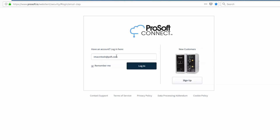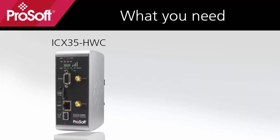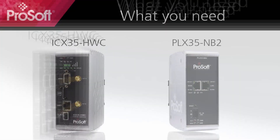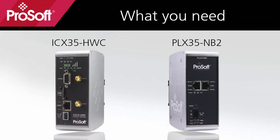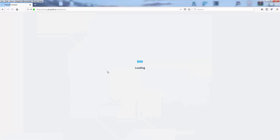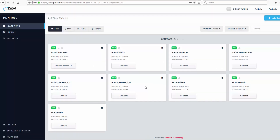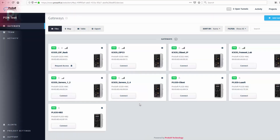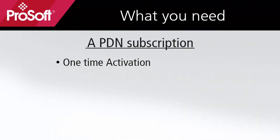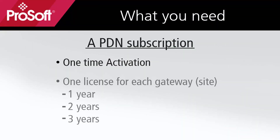You will also need the ICX-35 cellular gateway and/or the NB2 wired gateway — at least two, but as many as are needed for your application. Next, you would purchase a PDN subscription. This will entail a one-time activation and a subscription for each gateway, or site as they're referred to, that you plan on using in your PDN project.